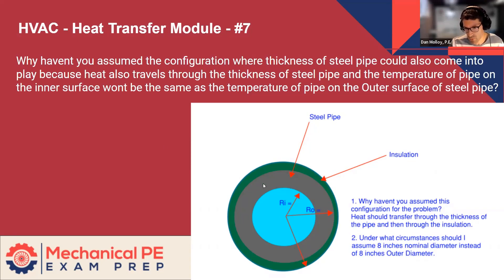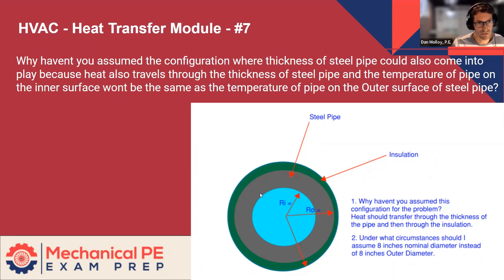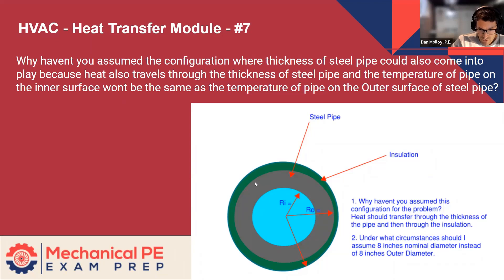Just in terms of the relative thickness of the pipe as you've drawn it — you have the pipe looking like it's two or three times thicker than the insulation, when in reality the pipe is very thin. If it's schedule 40, it might be something like a quarter inch or a bit more. The insulation could be an inch to several inches in many cases, depending on requirements. So that relationship should be inverted: more green and way less gray would be a better picture.